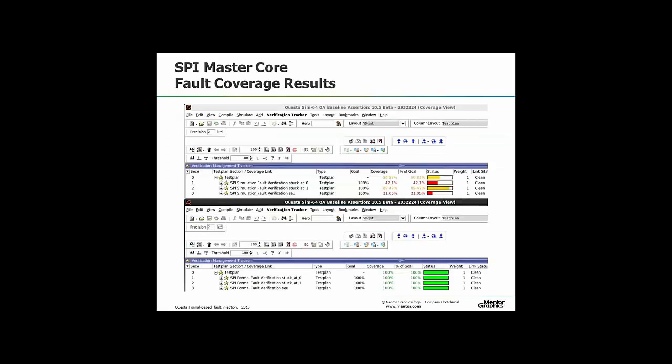In terms of coverage, comparing simulation and formal: with simulation you can see we're some way off our goal running stuck at zero, stuck at one, and transient single event upset type faults. Using Questa Formal on the SPI, formal was able to achieve 100% coverage.